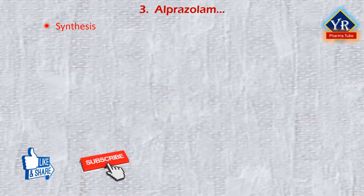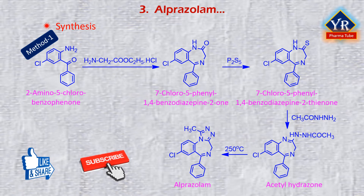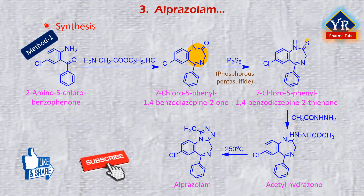Alprazolam can be synthesized by two different methods. In the first method, synthesis starts from 2-amino-5-chlorobenzophenone, which initially reacts with ethyl ester to give 7-chloro-5-phenyl-1,4-benzodiazepine-2-one. Interaction with phosphorus pentasulfide transforms the carbonyl group into a thiocarbonyl group, giving 7-chloro-5-phenyl-1,4-benzodiazepine-2-thione. The resulting cyclic thioamide reacts with acetylhydrazine to give the corresponding acetylhydrazone, which upon heating cyclizes into alprazolam.